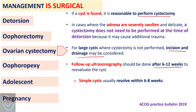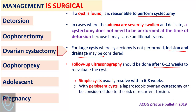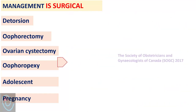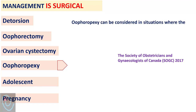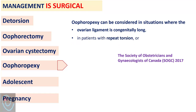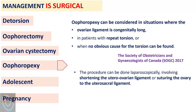If the ovarian cyst is left, follow-up ultrasound should be done after 6 to 12 weeks to re-evaluate the cyst. Simple cysts usually resolve within 6 to 8 weeks. With persistent cysts, laparoscopic ovarian cystectomy can be considered to decrease the risk of recurrent torsion. Oophoropexy can be considered when the ovarian ligament is congenitally long, in patients with repeat torsion, or when no obvious cause for torsion can be found. The procedure involves laparoscopic shortening of the utero-ovarian ligament or suturing the ovary to the utero-sacral ligaments.